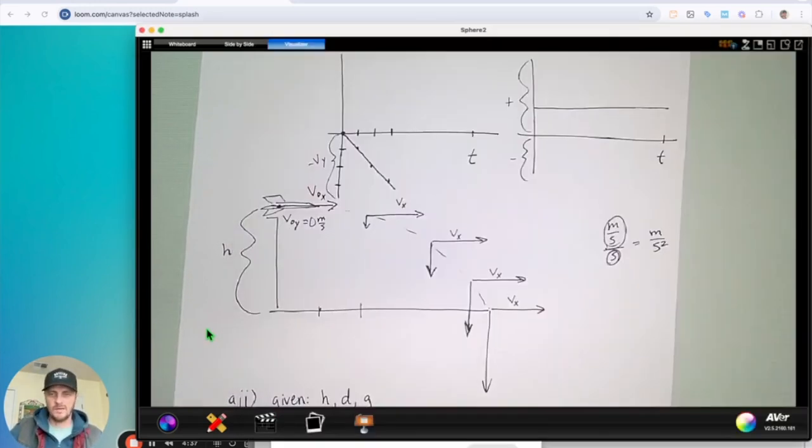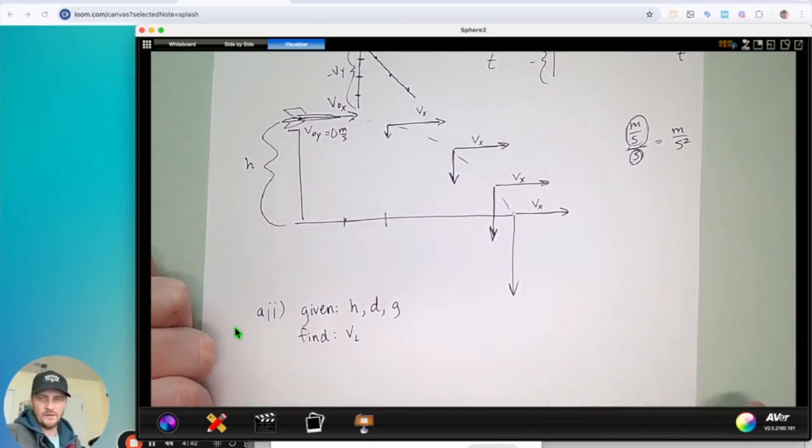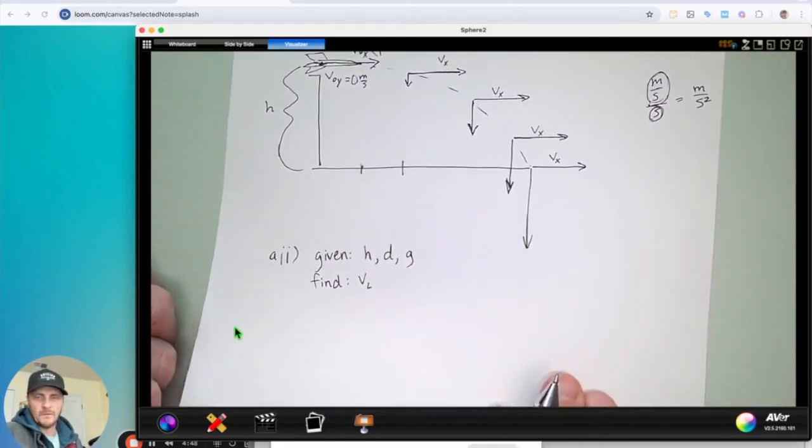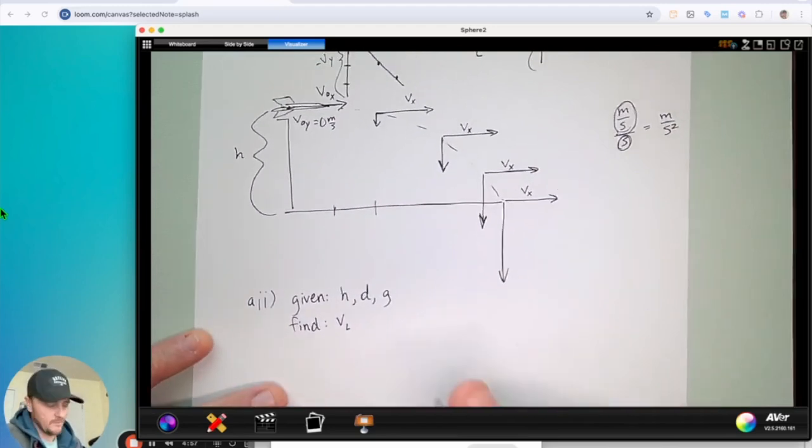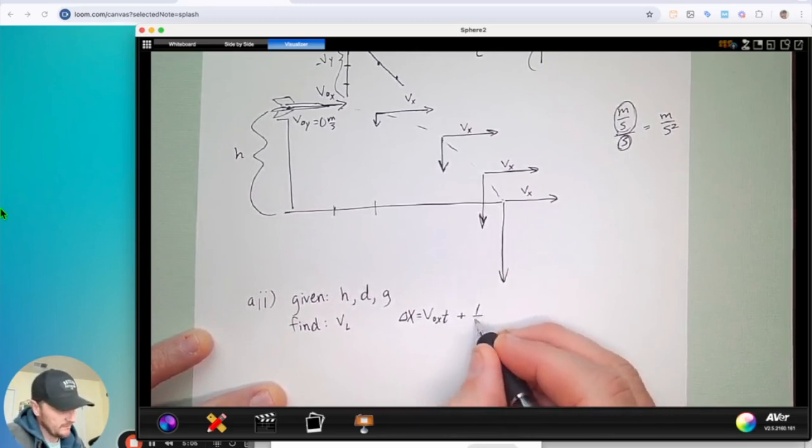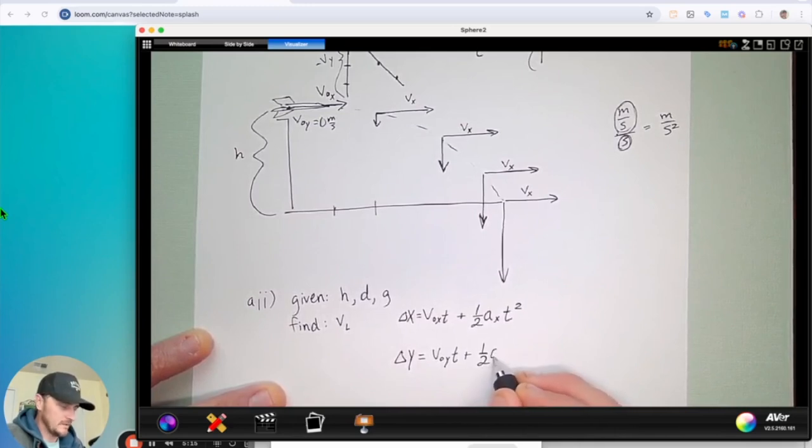All right, so going back over to our paper, the way I write that out is just like that. Oh, and by the way, we're calling this A1. So 90, I don't know, 95% of the time, your starting point should always be this kinematic equation. Delta X equals V0X T plus 1 half AX T squared, and delta Y equals V0Y T plus 1 half AY T squared, just like that.